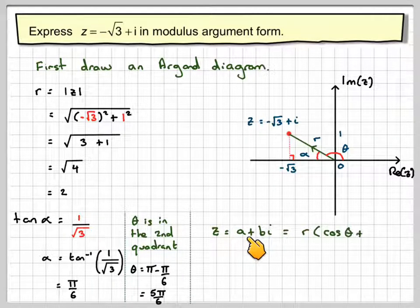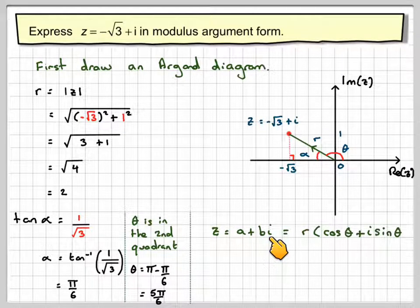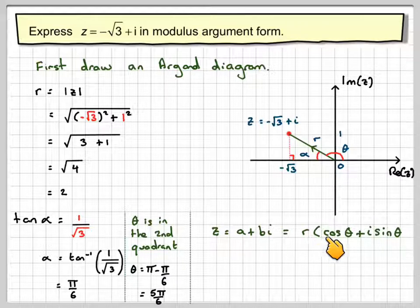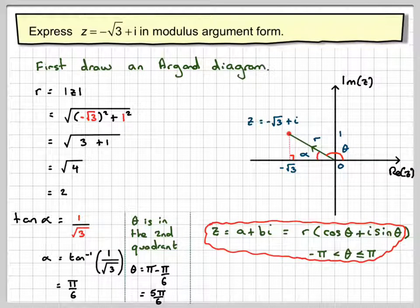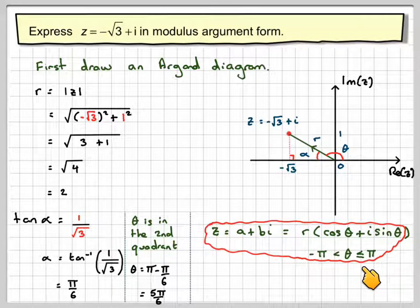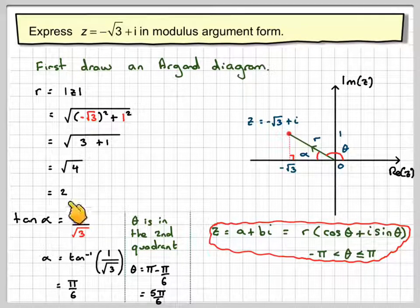So z is equal to a plus bi in modulus argument form is r cos theta plus i sine theta, where theta is between minus pi and pi. We've got the value of r, we've got the value of the argument theta, so we can go straight away.